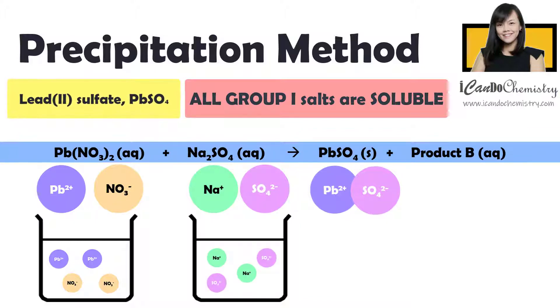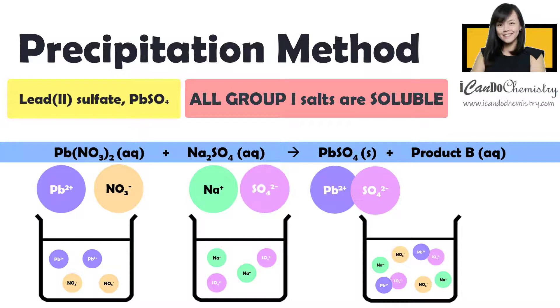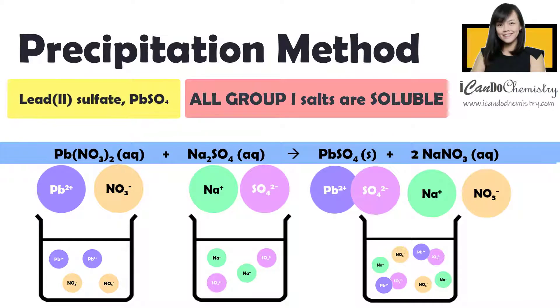Now when we mix these two solutions together, lead(II) ion will be attracted to sulfate ion. Insoluble lead(II) sulfate will be precipitated. Now do note that precipitate is a solid. Hence we change the state symbol to S. Whereas sodium ion and nitrate ion remain in the aqueous solution. Hence the state symbol remains as Aq.